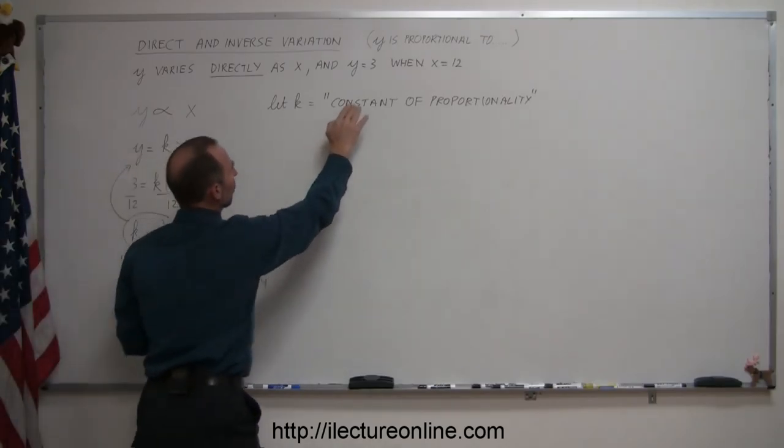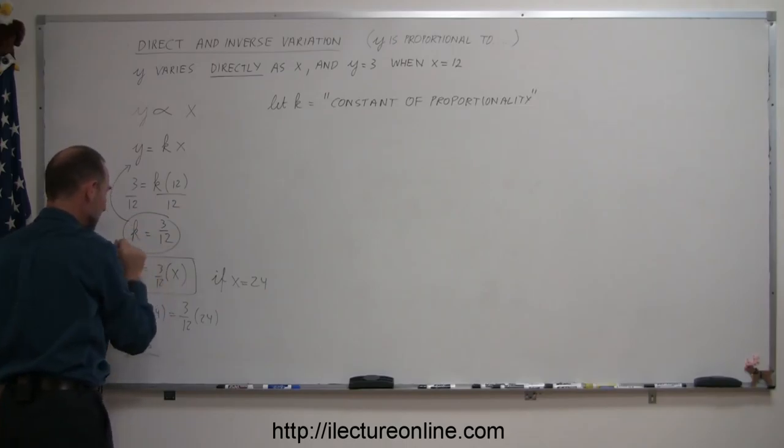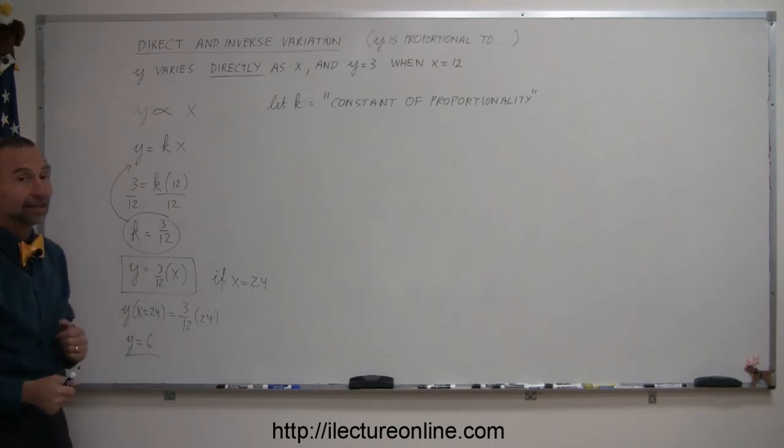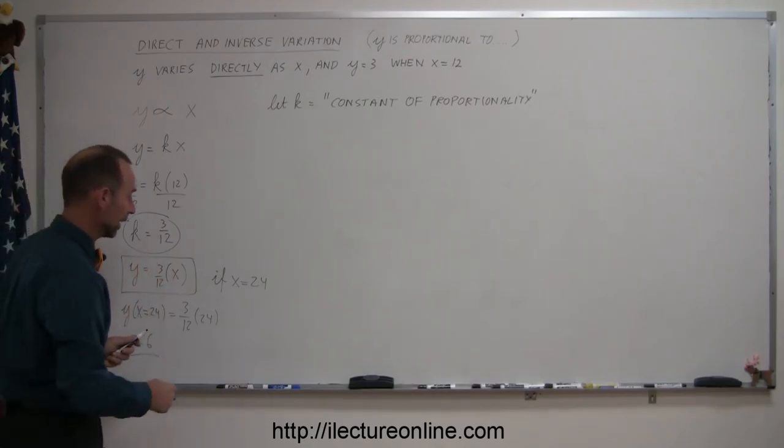And so there's an example of how you solve these kinds of problems. Okay. So again, to summarize, they give you some information where they show you that y is proportional to x or y is directly related to x. Then to find, to turn into an equation, you need a constant of proportionality.